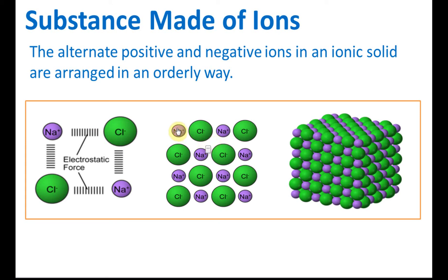Because the positive charge attract negative, negative attract positive, positive attract negative, and therefore they will arrange in this manner. Positive, negative, positive, negative. And become a very big structure. So the alternate positive and negative ions in an ionic solid are arranged in an orderly way.